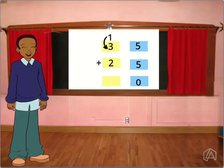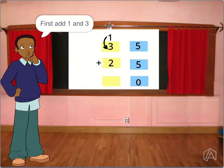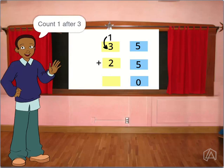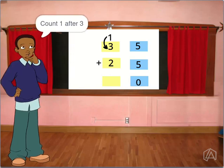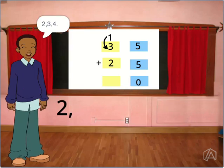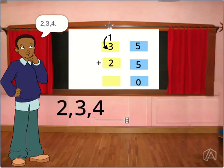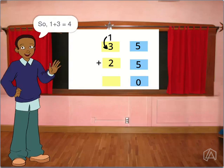First, add 1 and 3. Count 1 after 3: 2, 3, 4. So, 1 plus 3 is equal to 4.